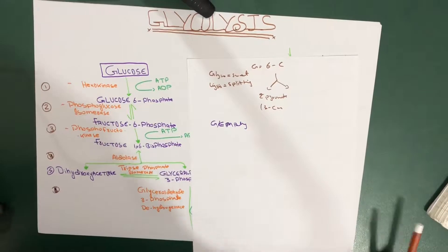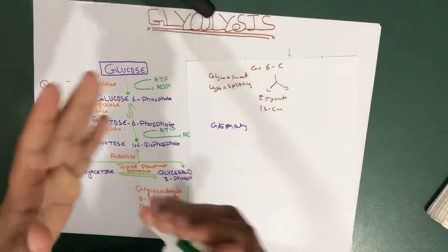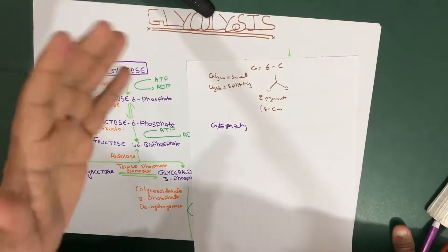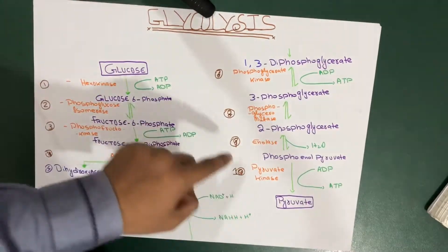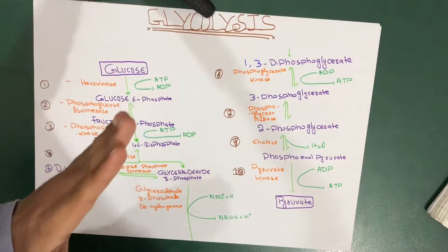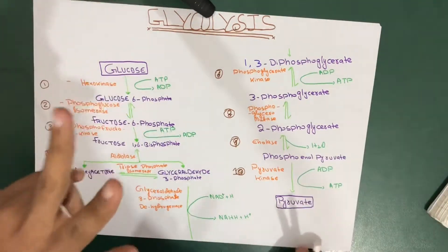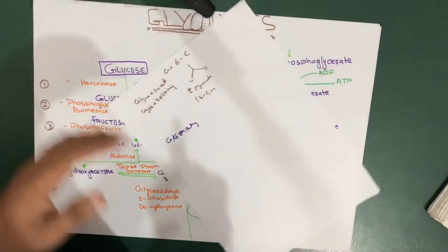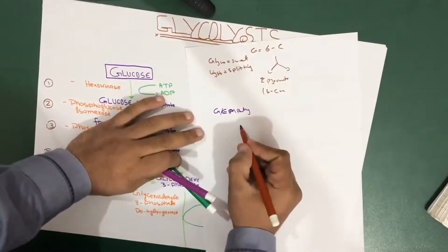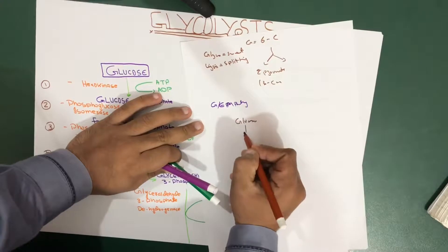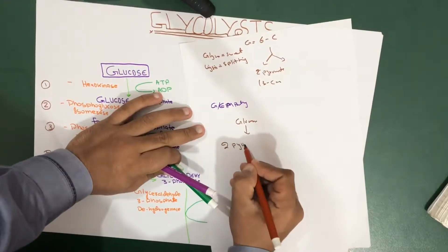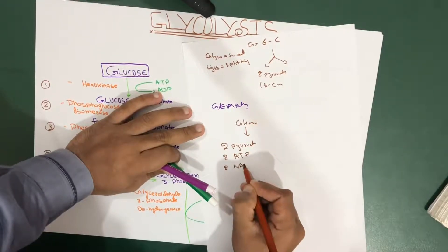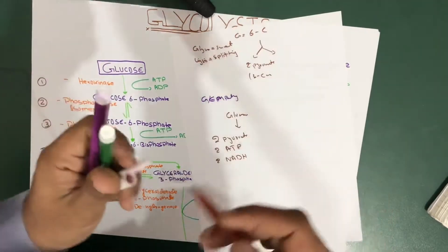Glycolysis can be defined as a sequence of reactions for the breakdown of glucose, a six-carbon molecule, into two molecules of pyruvate acid. In addition to two pyruvate molecules, we also get two ATPs as the final net product and two NADH. These are the products we get from glycolysis.